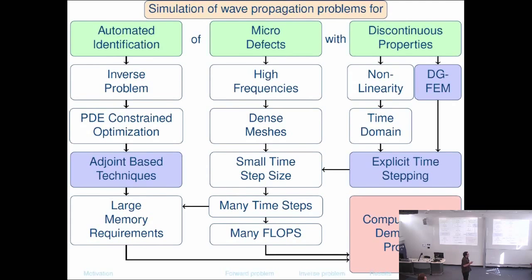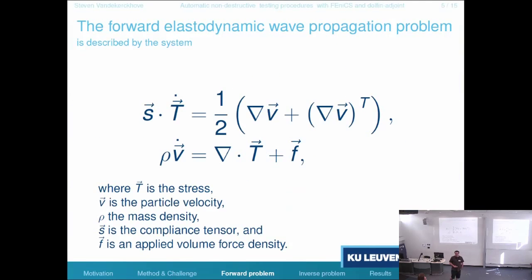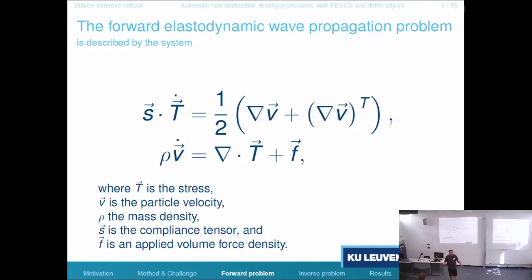Before I can tackle the inverse problem, I have to solve my forward problem. This is the system I'm solving — it represents an elastodynamic wave equation. There is a stress-compliance tensor, particle velocities, and mass density. I use a mixed formulation, so you can also write it down as a second-order equation. I use the mixed system because I want to later use PMLs — perfectly matched layers — for truncating infinite or large domains for simulation purposes.